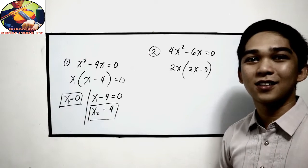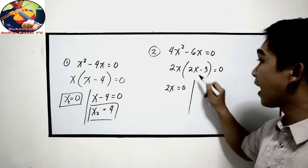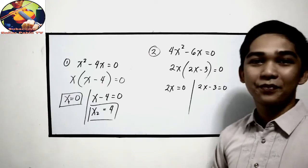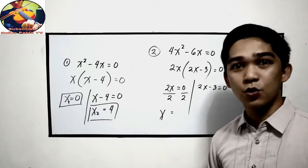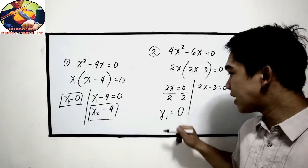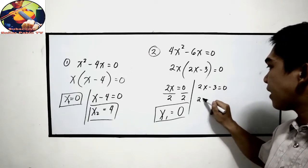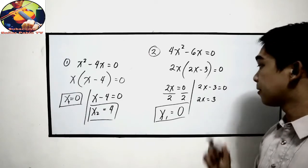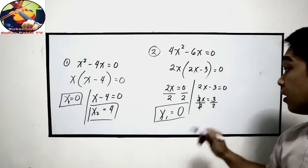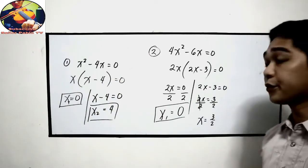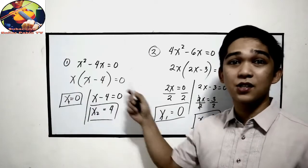The outer factor equals 0. Equate to 0: 2x equals 0. Divide by 2, so x sub 1 is 0. For the other factor, 2x minus 3 equals 0. Transpose negative 3, then divide both sides by 2. So x sub 2 is equal to 3 over 2. That is the greatest common factor technique.